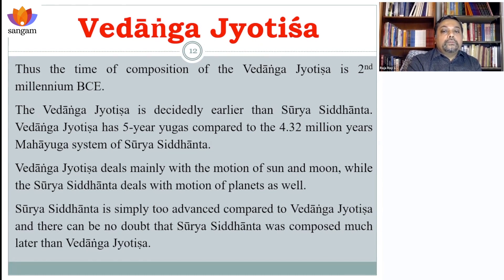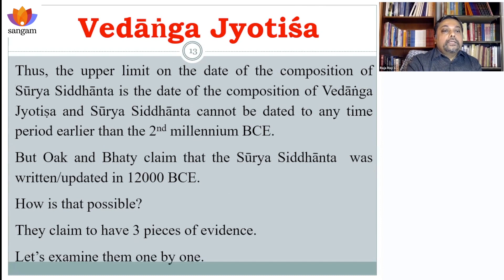If you look into the development of the history of science and astronomy, we have an upper limit of 2000 BCE — and that is giving too much latitude. Surya Siddhanta is much, much later than that. So if it is, then how is it possible that it will have information that can be dated to 12,000 BCE? I am going to examine the three pieces of evidence one by one.